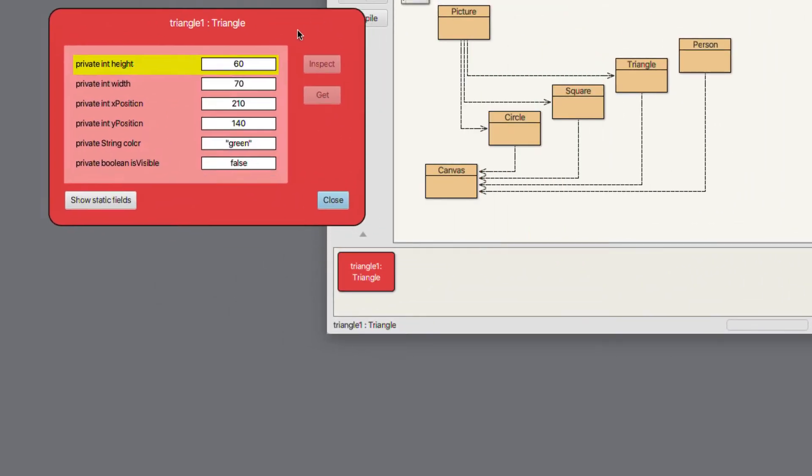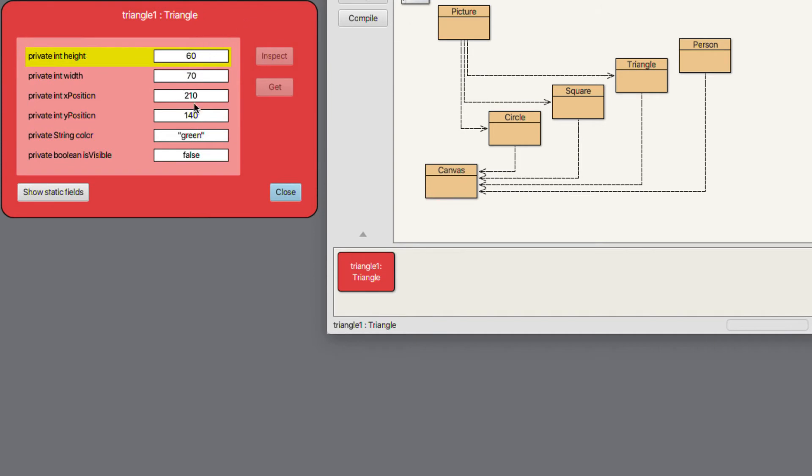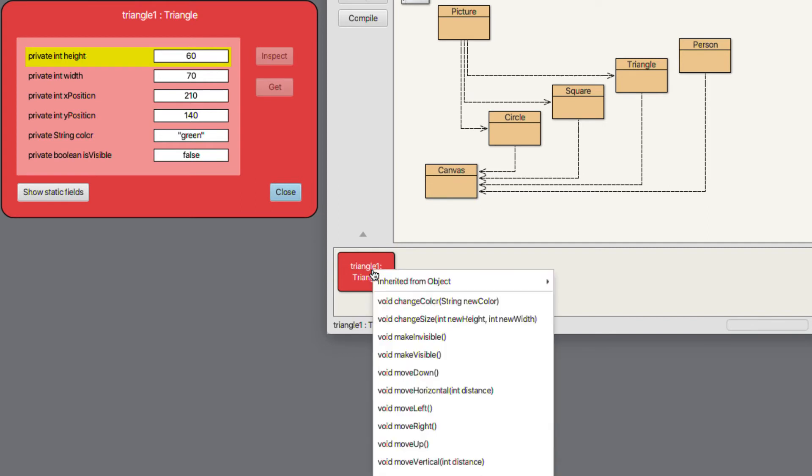Some of the ways in which we can interact with those data values are to call methods of the triangle. So we can see we've got things like change color, change size, make invisible, make visible and so on.